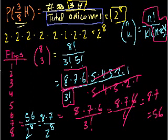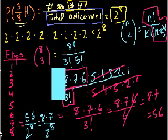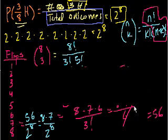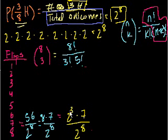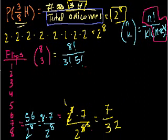So 8 is the same thing as 2 to the 3rd times 7, over 2 to the 8th. And so if we just divide both sides, the numerator and the denominator by 2 to the 3rd, this becomes 1, this becomes 2 to the 5th. And so it becomes 7 over 32. So if I were to pick 3 out of 8, I think that is right.